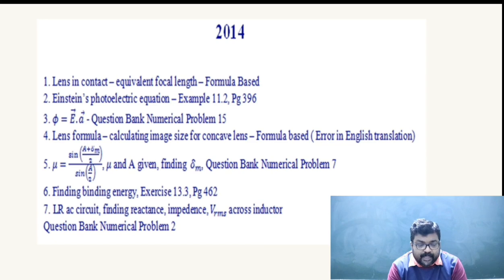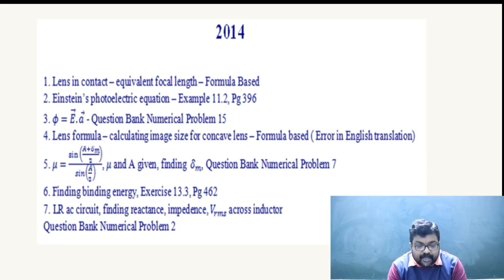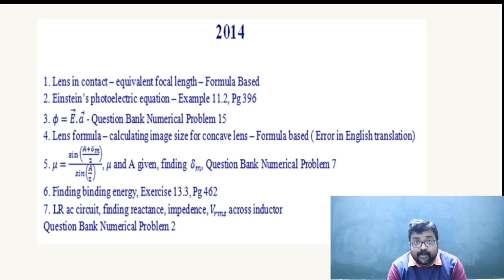Also in 2014: the prism formula μ = sin((A + δ_M)/2) / sin(A/2), where μ and A were given and δ_M was to be calculated — Question Bank Numerical Problem 7. Finding binding energy — Exercise 13.3, page 462. LR circuit finding reactance and impedance across the inductor — Question Bank Numerical Problem 2 from the chapter Alternating Current.